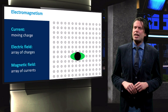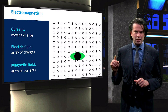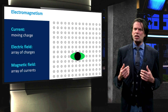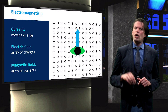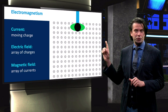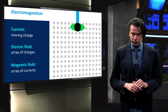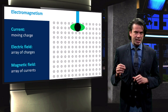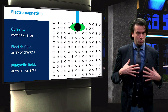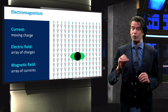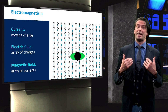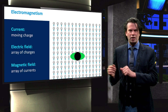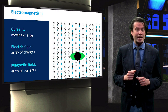Let us now assume that we are within an array of charges indicated by the small circles. Since charges themselves create an electric field, we will experience such a field. Now, as indicated by the black on the green figure, we start moving with a constant velocity. Us moving with respect to the charges is equivalent to saying that the array of charges moves with respect to us. Since moving charges are the definition of a current, we now experience a magnetic field. Thus, when changing from one frame of reference into another, electric fields are transformed into magnetic fields and vice versa.